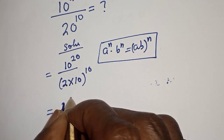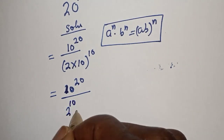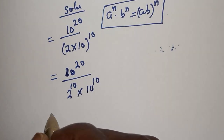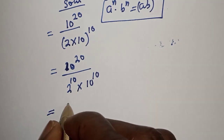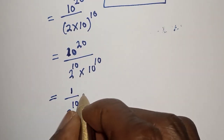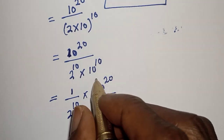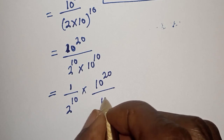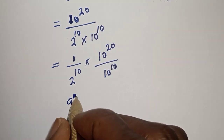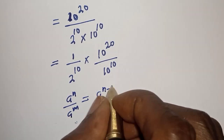So this becomes 10 raised to power 20 divided by 2 raised to power 10 multiplied by 10 raised to power 10, which equals 1 over 2 raised to power 10, multiplied by 10 raised to power 20 divided by 10 raised to power 10. Now, if you have a raised to power n over a raised to power m, this is equal to a raised to power n minus m.